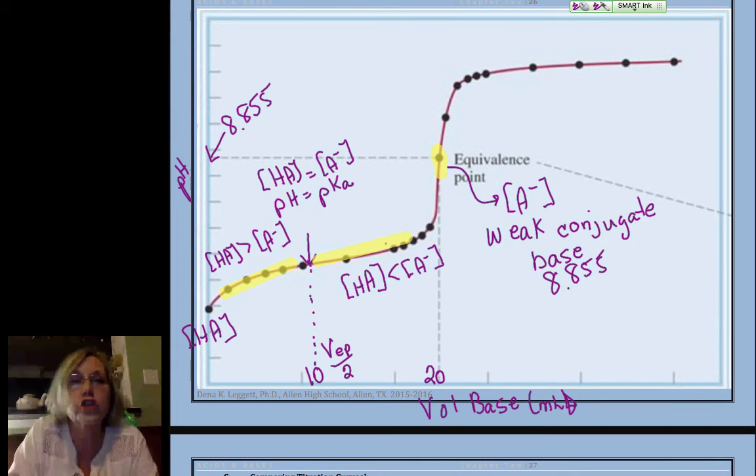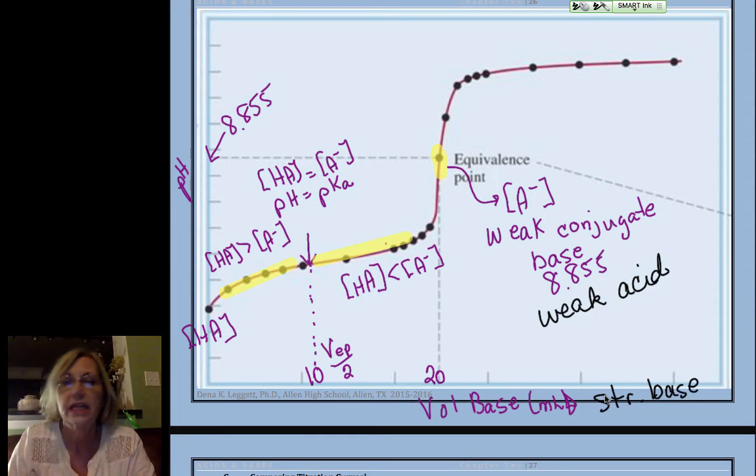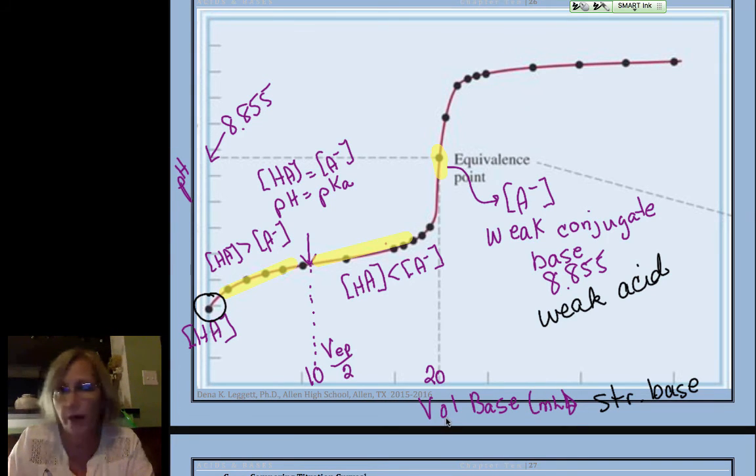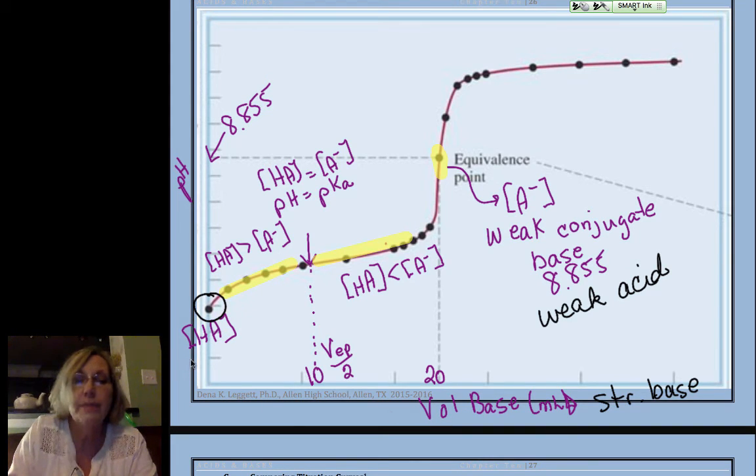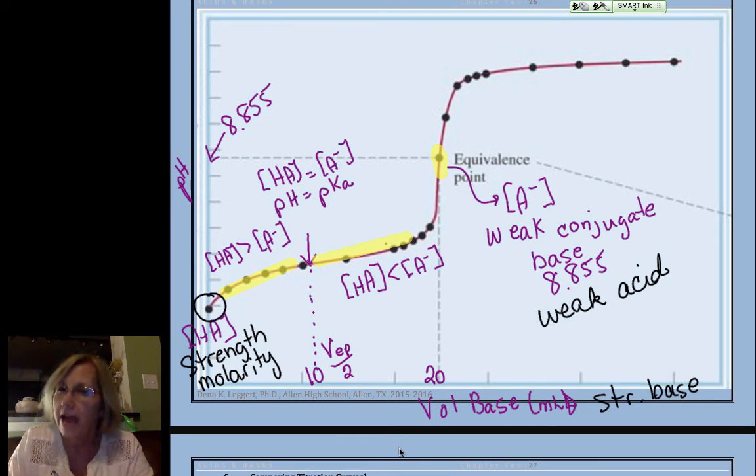And because all we have is a weak conjugate base, that defines the pH there, and that pH was 8.855. So this pH was 8.855. You can define the strength of your acid by the pH at the equivalence point. Because it's basic, that proves we must have had a weak acid being titrated by our strong base.